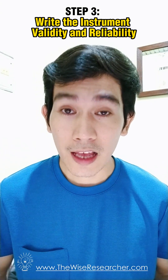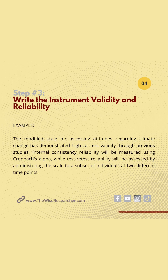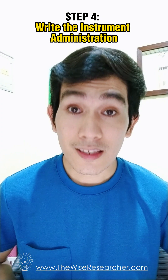Step number three: write the instrument validity and reliability. The modified scale for assessing attitudes regarding climate change has demonstrated high content validity through previous studies. Internal consistency reliability was measured using Cronbach's alpha, while test-retest reliability will be assessed by administering the scale to a subset of individuals at different time points.